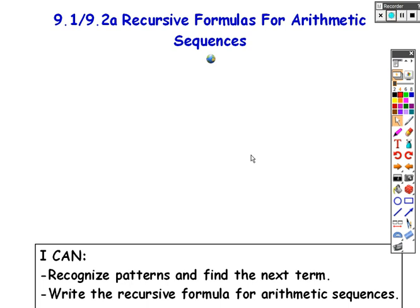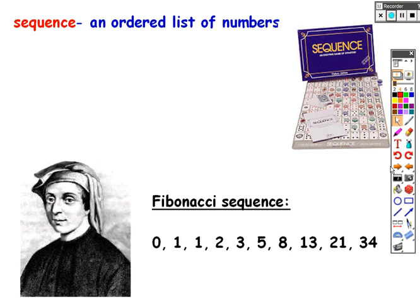For the next week or two we're going to study sequences and series. Sequences are something you should have looked at in algebra 1, so let's see how much you remember. A sequence is essentially an ordered list of numbers. A very famous sequence is the Fibonacci sequence, obtained by taking two numbers and adding them to get the next term. So 1 plus 1 is 2, 1 plus 2 is 3, 2 plus 3 is 5 — this is a sequence because it's a list of numbers that follows a pattern.